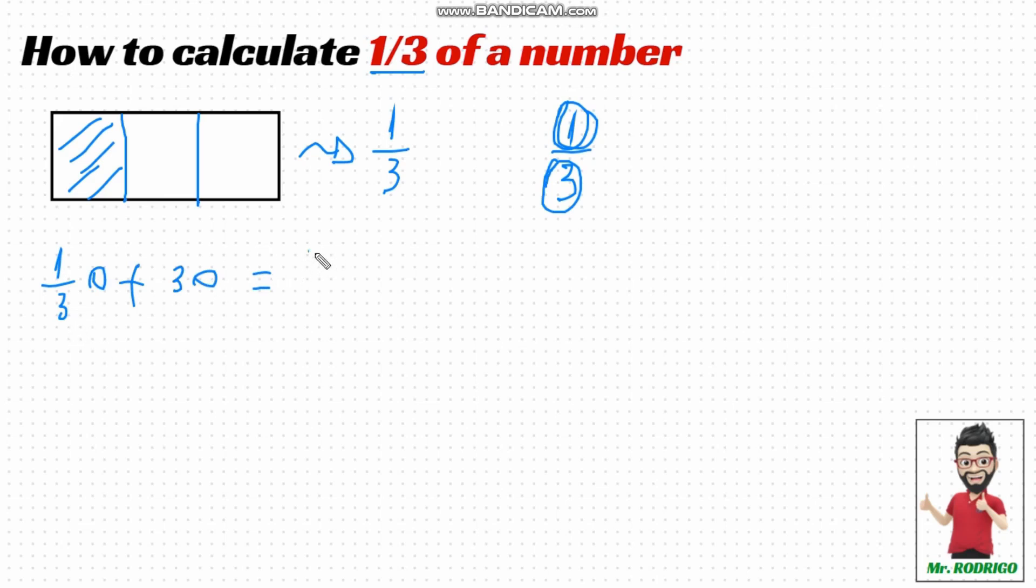So, 30 divided by 3 is equal to 10. That means each of these parts here is worth 10 in this figure. It represents 30, which was divided into three equal parts, and each part is worth 10.